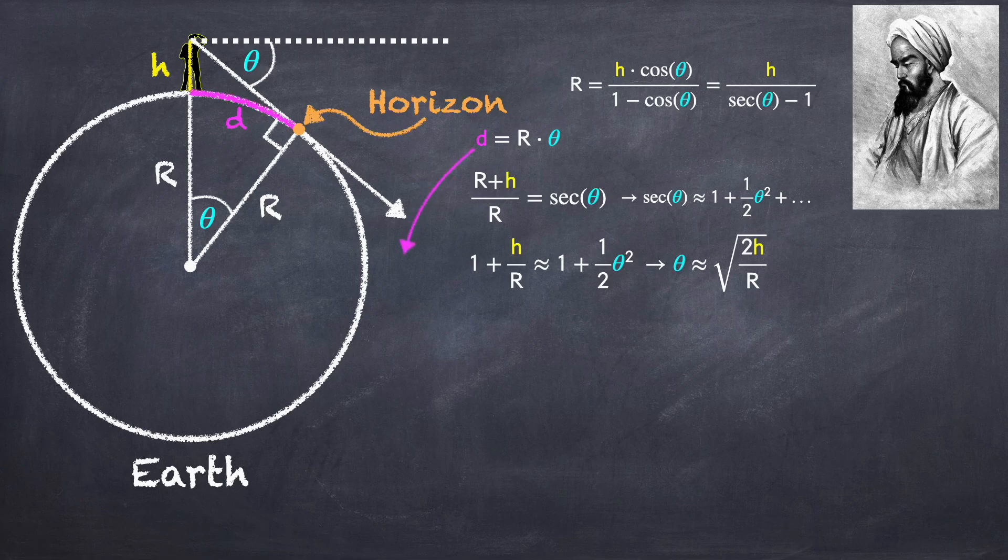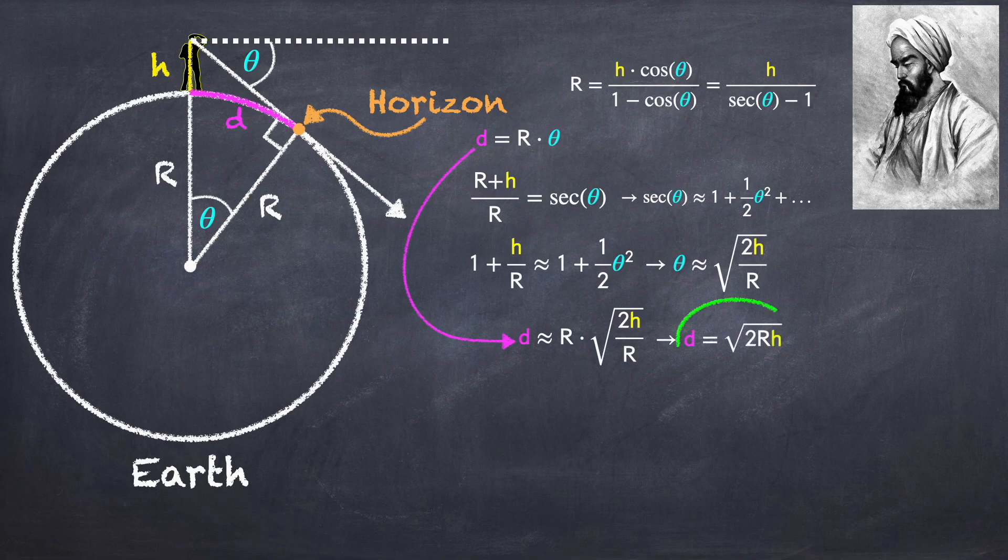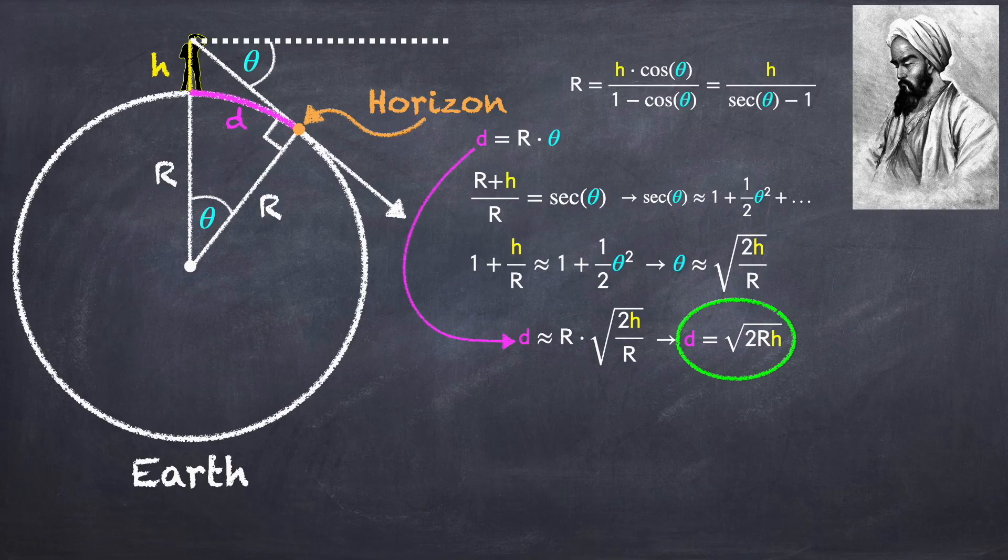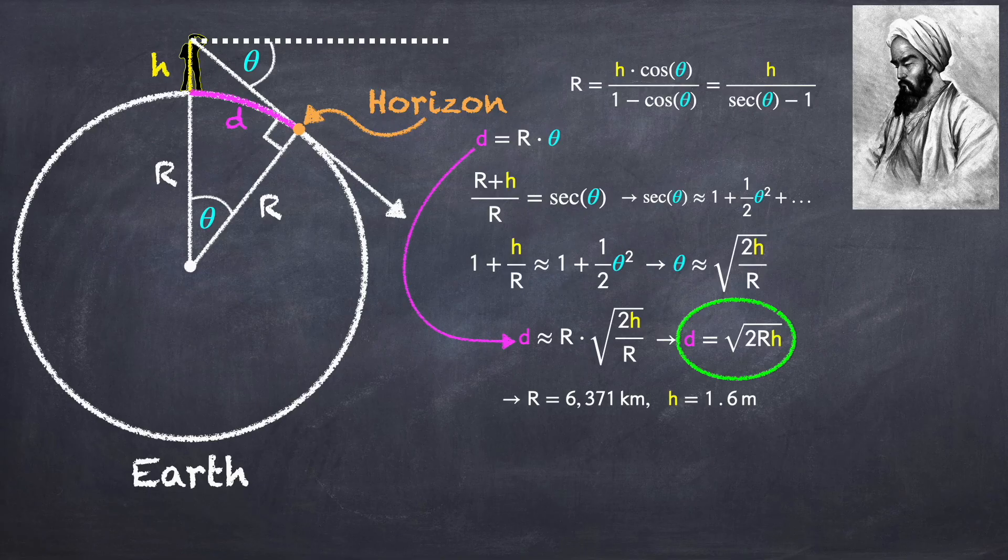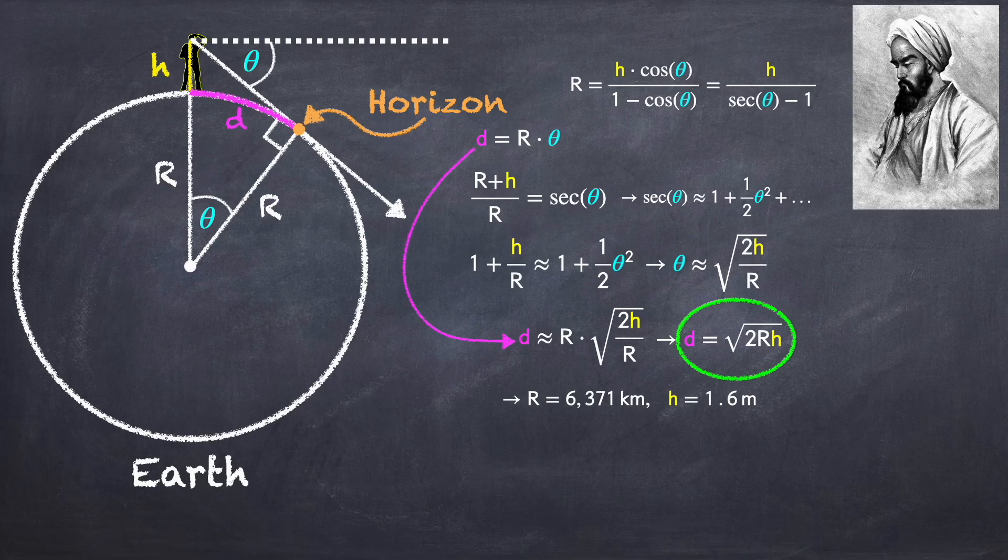We can now plug this into our expression for d to get that the distance to the horizon is equal to the square root of 2 times the radius of the earth times the height h. The average radius of the earth is a little over 6,000 kilometers, and I'm going to take the average height of a person, or actually the average height of a person's eyes, to be about 1.6 meters.